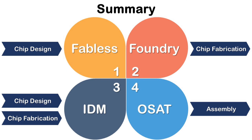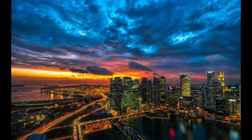In summary, there are four areas in the semiconductor ecosystem: Fabless, Foundry, IDM, and OSAT. Thanks for watching and have a nice day. Bye-bye.